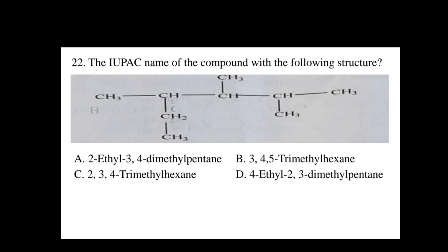Question number 22: To find the IUPAC name of the compound with the following structure, when we look at the functional group — alkene, alkyne, alkene, carboxylic acid — we identify the longest continuous chain which contains the functional group.